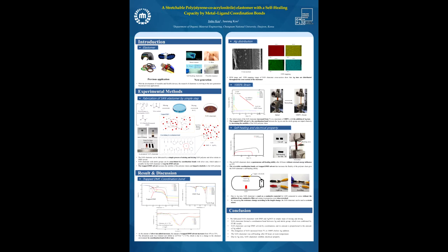In this study, we fabricated stretchable polystyrene coacrylonitrile elastomer with a self-healing capacity by metal ligand coordination bonds. The SAN elastomer can be fabricated by a simple process of mixing and drying SAN polymer and silver nitrate in DMF solvent.